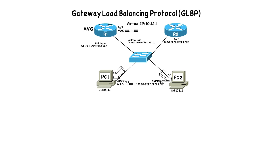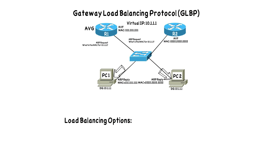We can tweak how the load balancing works. There are three different load balancing options in GLBP. The default is round-robin. With round-robin, the Active Virtual Gateway responds to ARP queries by giving out the virtual MAC addresses of all Active Virtual Forwarders an equal number of times. The AVG responds to one ARP request with the all-ones MAC address, the next with the all-twos MAC address, then back to all-ones, then all-twos. If there were four routers, it would give out each AVF's MAC address an equal number of times — equal load balancing across all AVFs. Note that traffic won't be perfectly balanced since some clients send more traffic, but we're equally dispersing the different AVF MAC addresses.